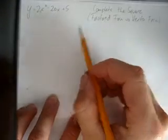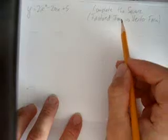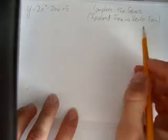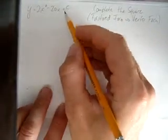Let's look at completing the square. That is, we're going to take an equation of a parabola that's in factored form and convert it to vertex form. We're starting with this equation: y equals 2x squared minus 20x plus 5.